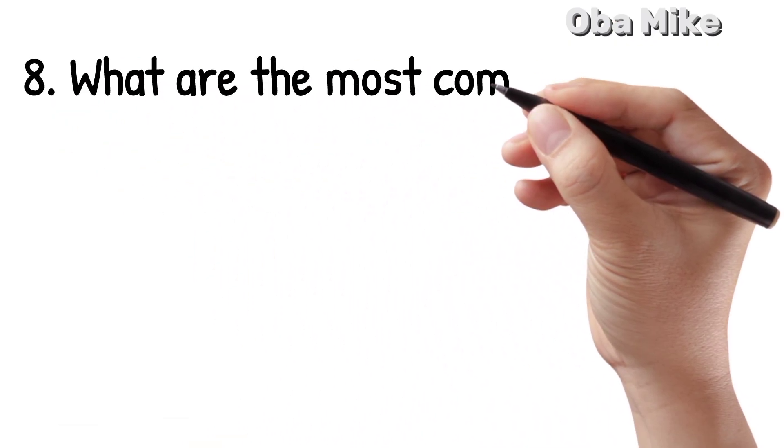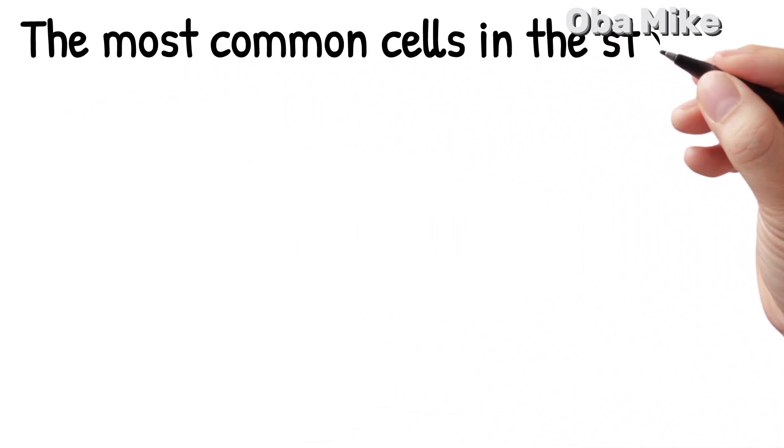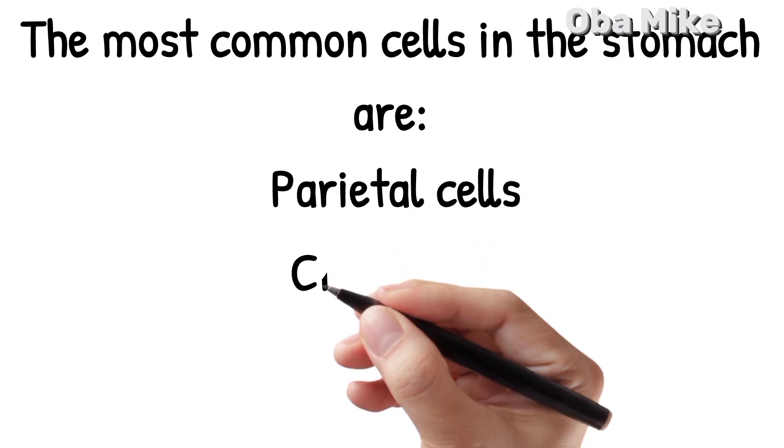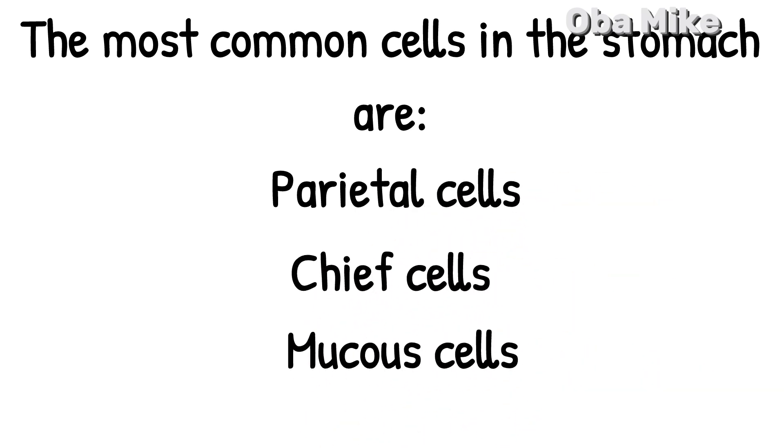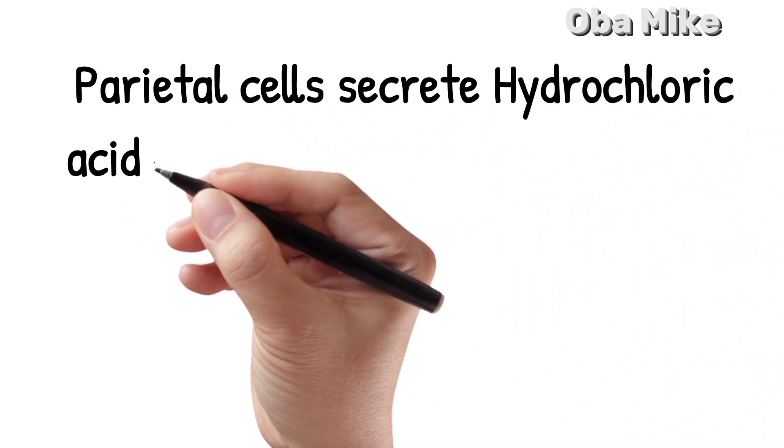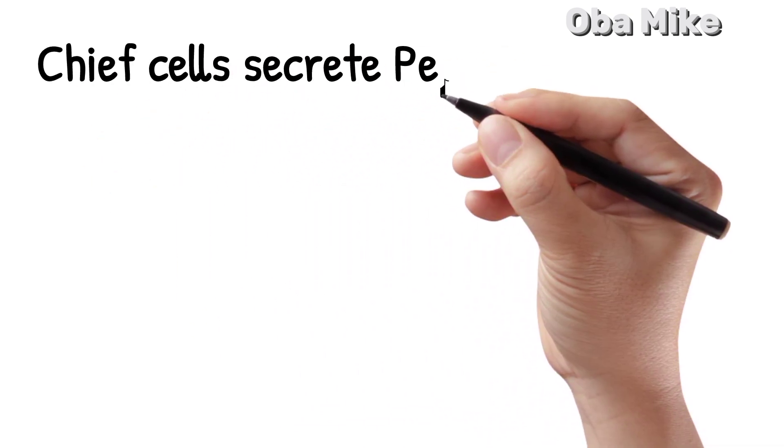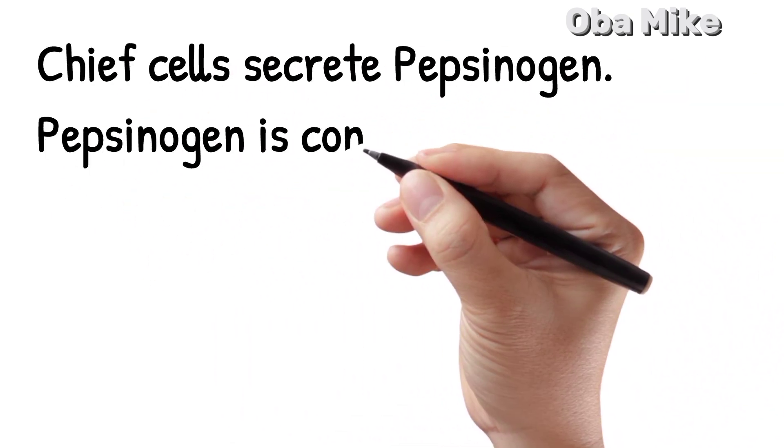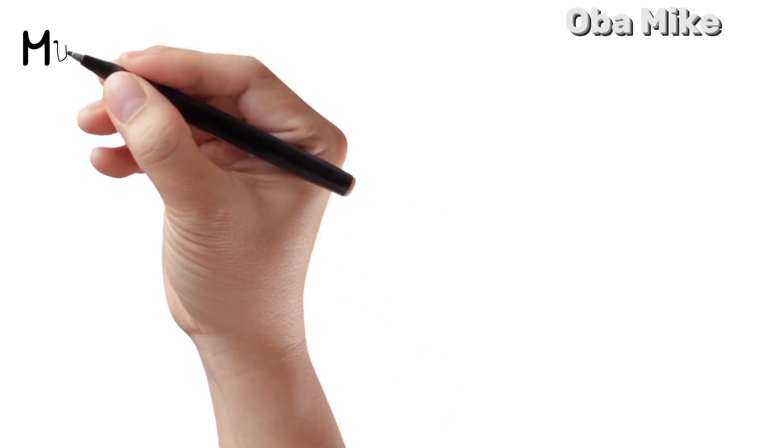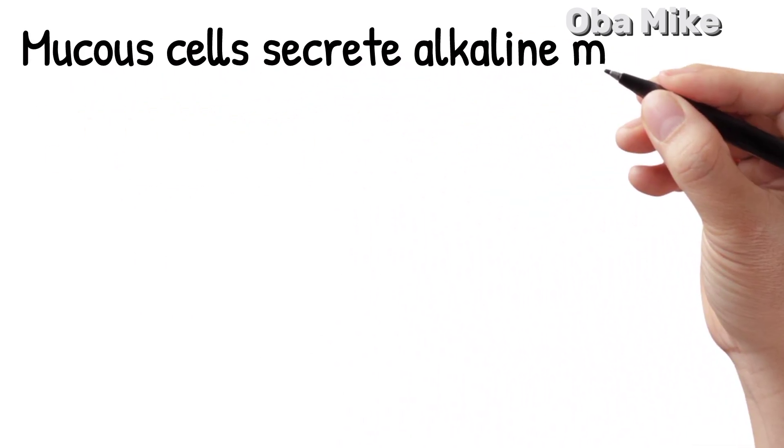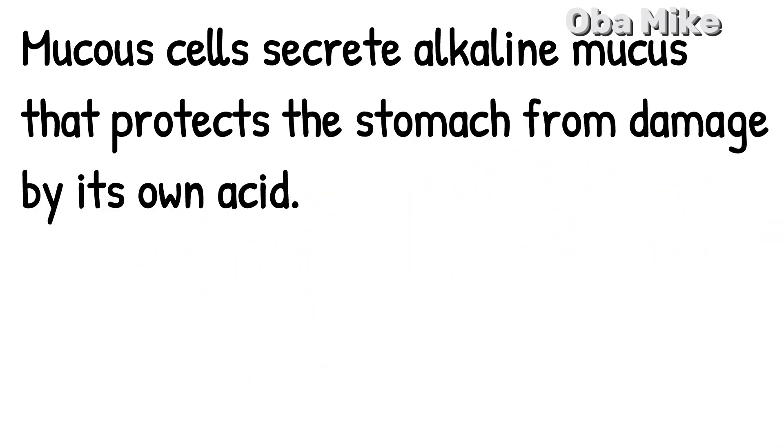Number 8. What are the most common cells in the stomach? The most common cells in the stomach are parietal cells, chief cells, and mucous cells. Parietal cells secrete hydrochloric acid, commonly called stomach acid. Chief cells secrete pepsinogen, which is converted to pepsin that digests proteins. Mucous cells secrete alkaline mucus that protects the stomach from damage by its own acid.